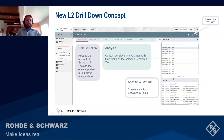For better visibility, we have introduced a new element to show the current list of selected sessions and tests. Moving from the purple selection part to the green analysis part requires the selection of a single test. This can be achieved, for example, by double-click on the test that should be further analyzed.